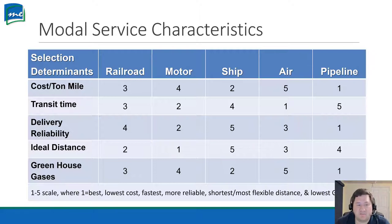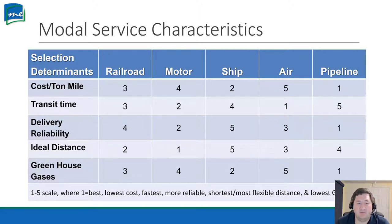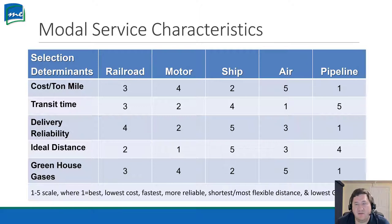For ideal distance, motor is the best while ship is the worst. What about greenhouse gases? Pipeline is actually the least — it's just a pipe, so it's not producing any greenhouse gases. Air, when you look at it per pound of cargo, might be the worst of all. You have to think about these factors when choosing your mode and what your company's goals are.